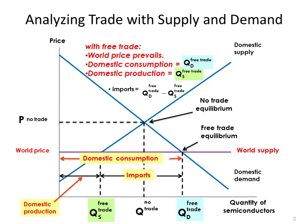That's our analysis of international trade using supply and demand. Make sure you understand each step in this diagram, because in the next slide when we add tariffs, it's going to make the diagram more complicated. Each step is actually pretty simple — no different than what we've already done — but the diagram will look a little bit messier. Go through this slide again if needed to make sure you understand each step.